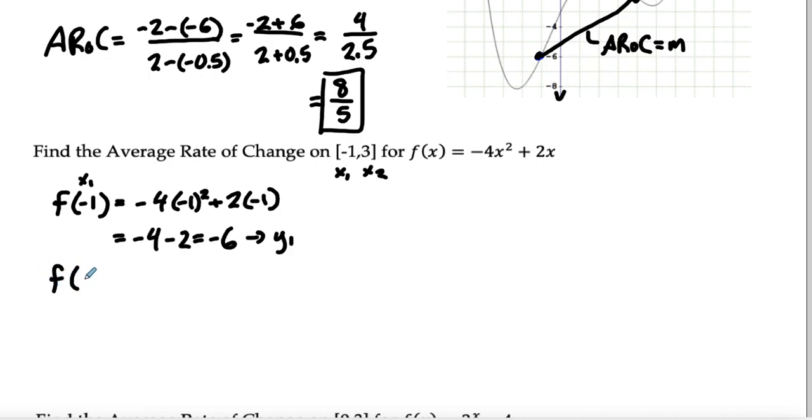Then we got f of 3, which is going to be my x2. And we input that, we're going to get negative 4 times 3 squared plus 2 times 3.